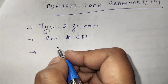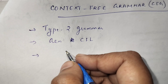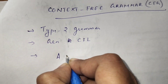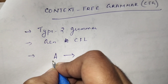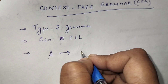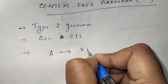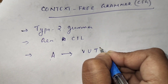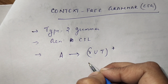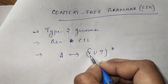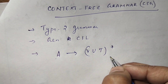A grammar is said to be a context-free grammar if every production is in the form A → α, where A is a single non-terminal in the LHS, and the RHS is a combination of terminals and non-terminals — variables, terminals, or a combination of both.